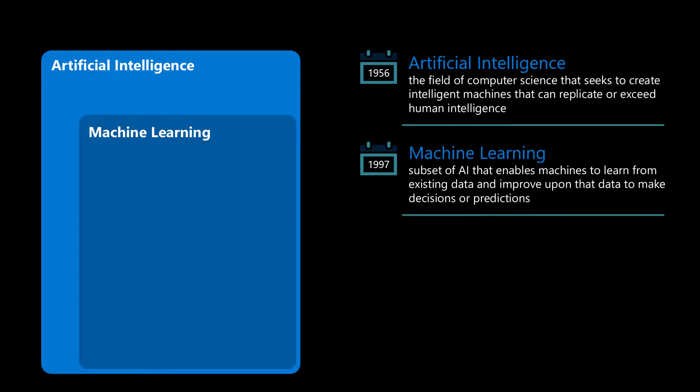A significant turning point arrived in the 1990s, when a statistical approach was applied to text analysis. This gave birth to machine learning algorithms, which could learn patterns from data without explicit programming. These algorithms allowed machines to simulate human language understanding, paving the way for the AI we know today.